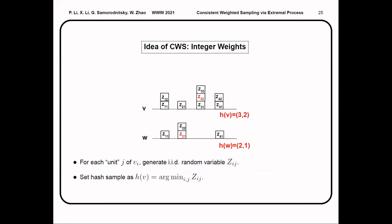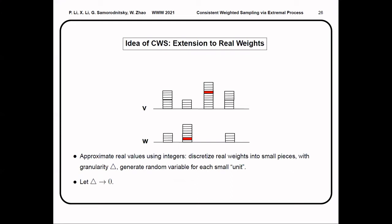To better understand the idea of CWS, we start with an integer case. Suppose the weight of v and w is integer. If we, for each unit j on dimension i, generate an i.i.d. random variable z_{ij} and set the hash sample as the argmin of z_{ij}, we can show that this procedure will output an unbiased Jaccard estimator. To extend this idea to real-valued weights, we can approximate real values using integers. We discretize real-valued weights into many small pieces with granularity delta. And similarly, we can also generate i.i.d. random variables for each small unit. And if we push delta to go to zero, then we can use this procedure to approximate any real weight.